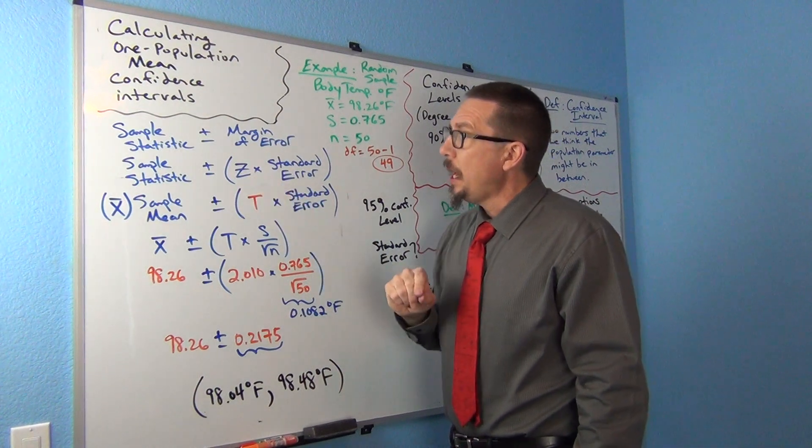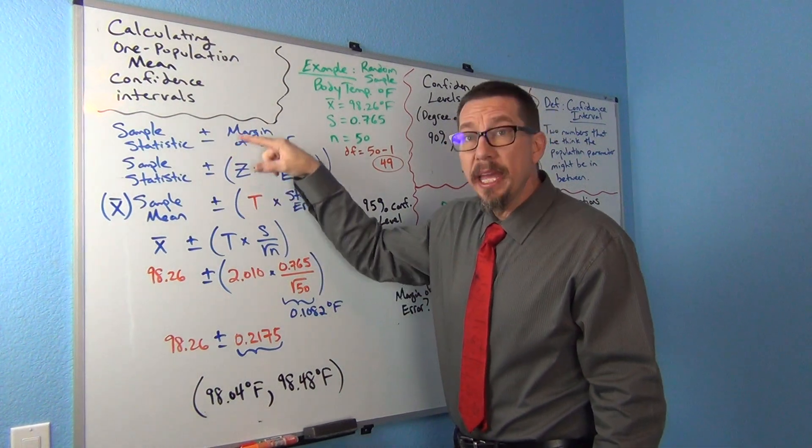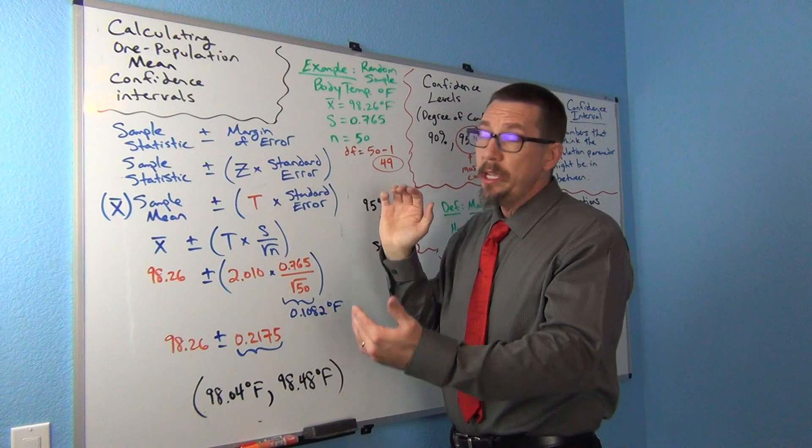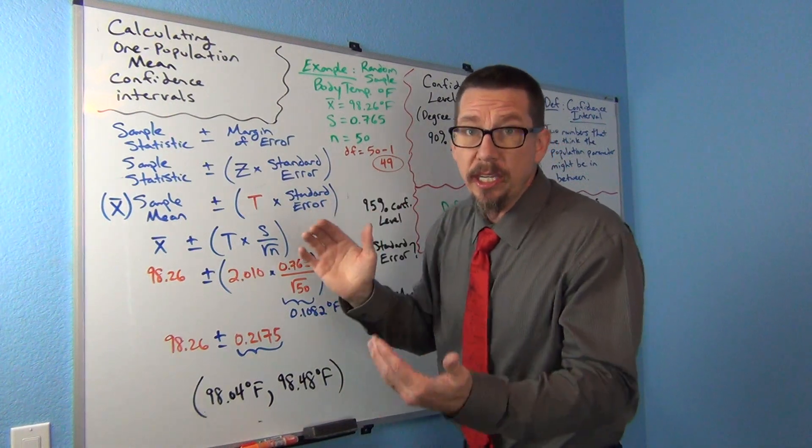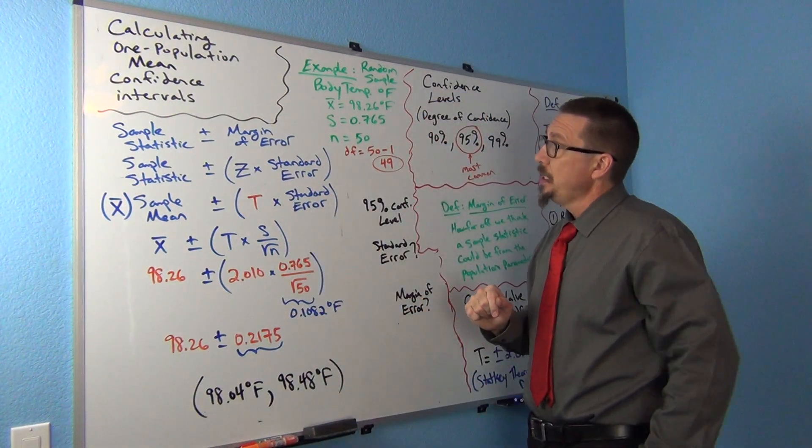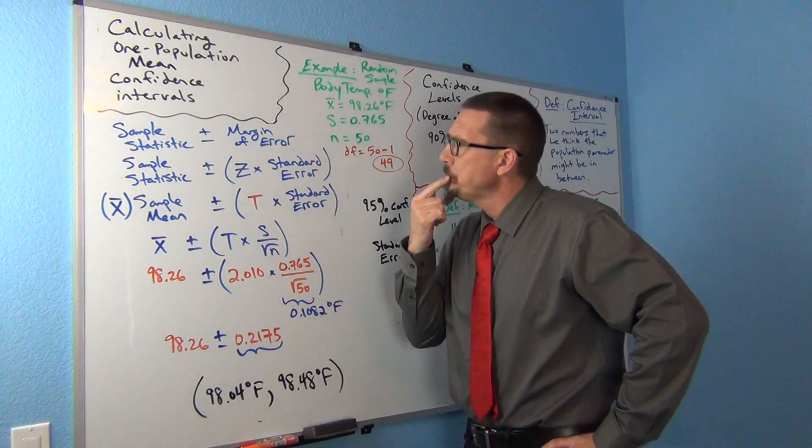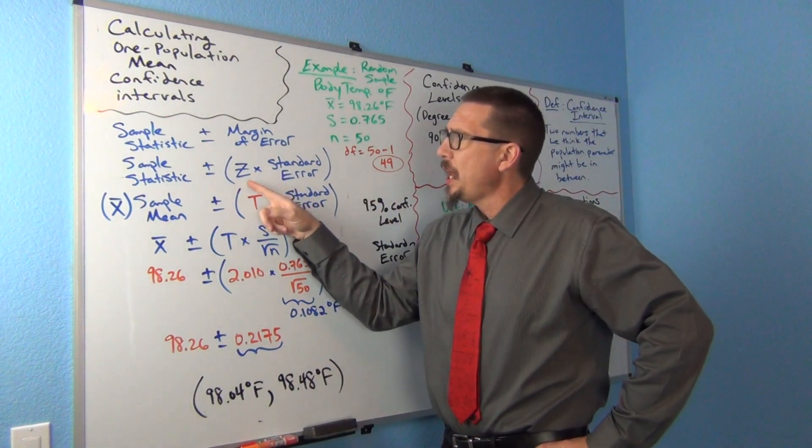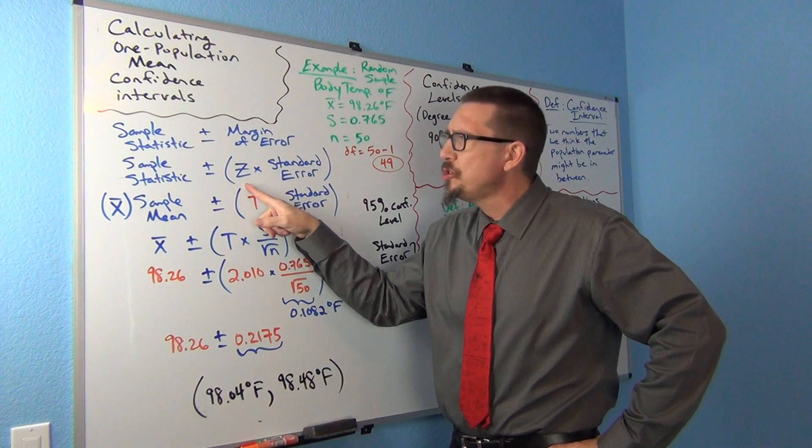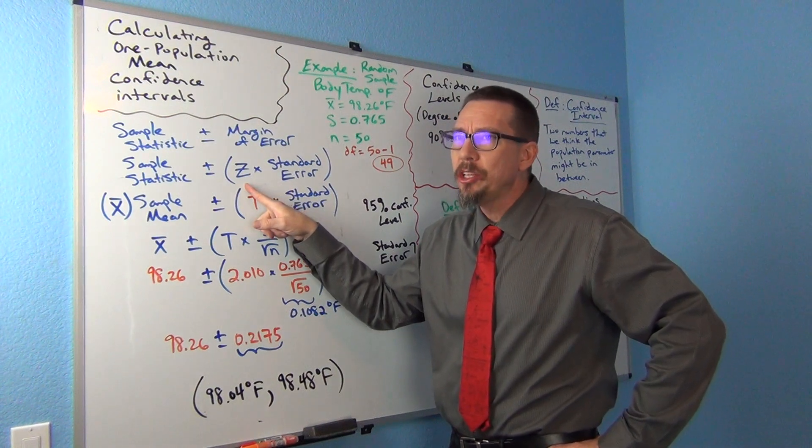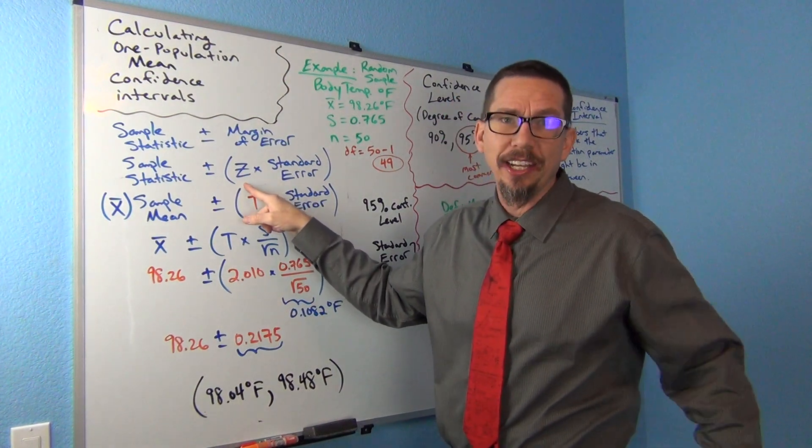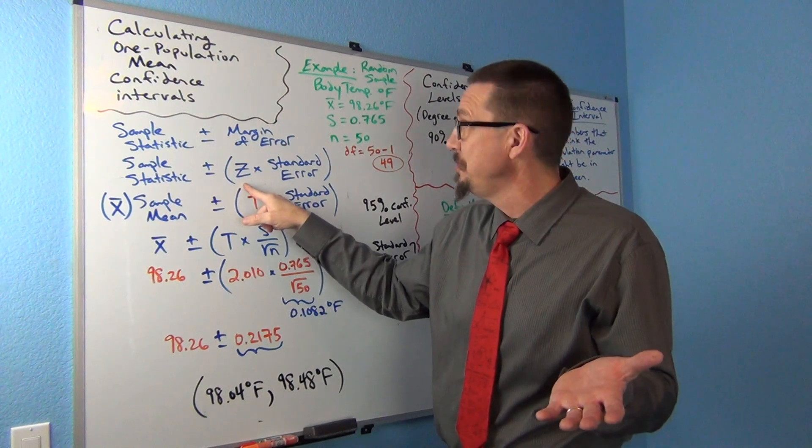Z-scores tell you how many standard errors I need to be away for 95 or 90 or 99% confidence. Now, the key with this is that we discovered a while back that z-scores weren't super accurate for smaller data sets when you're calculating a confidence interval for the one population mean.